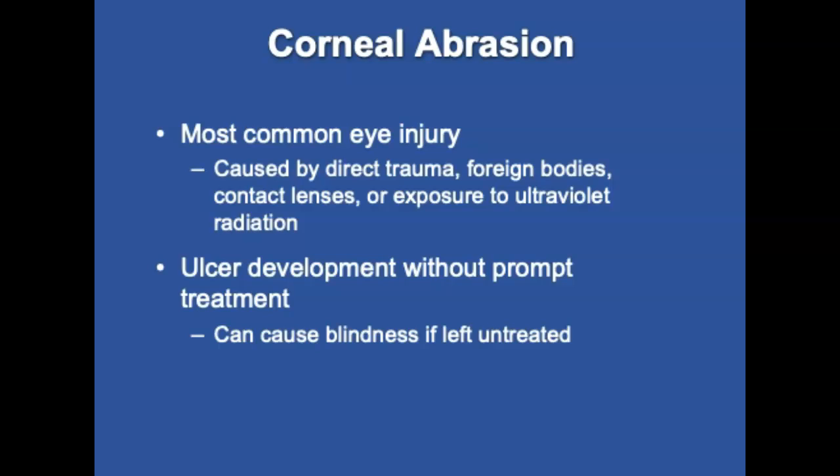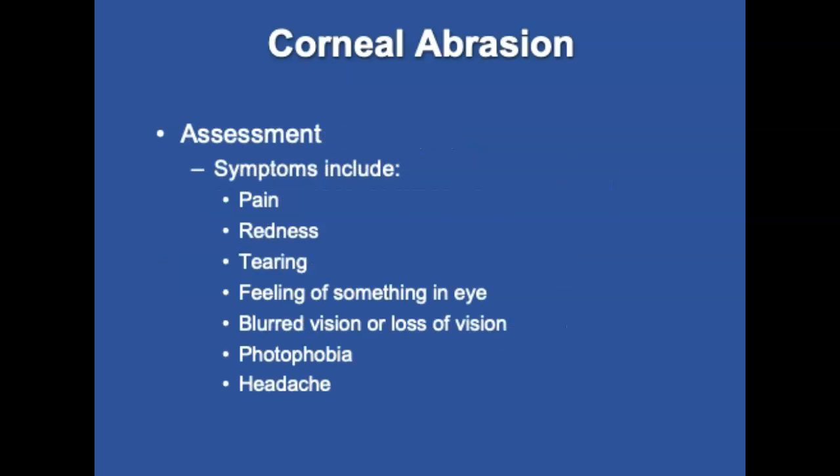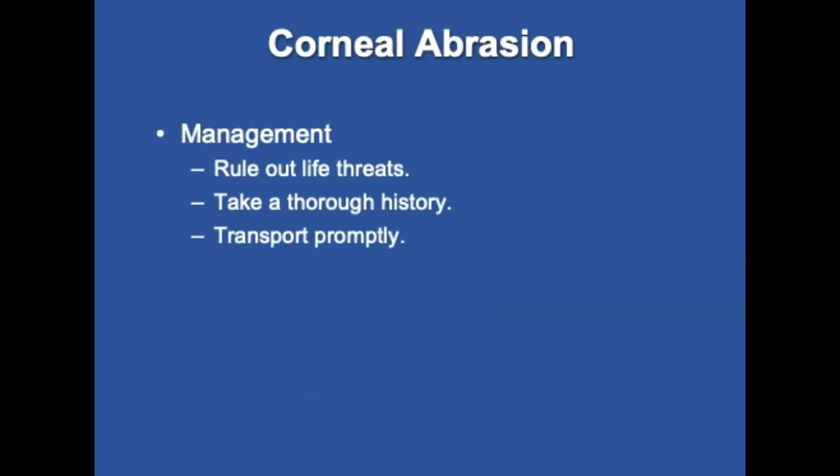Corneal abrasion or ulcer occurs when the cornea — the transparent outer covering of the eye — sustains trauma from a foreign body, contact lens, or exposure to ultraviolet radiation. It is the most common eye injury seen in the emergency department and can cause blindness if left untreated; an ulcer can develop. Signs and symptoms include pain, redness, excessive tearing, sensation of something in the eye, blurred vision, photophobia, and headache. Pre-hospital management involves ruling out life threats, taking a thorough history, and transporting promptly.